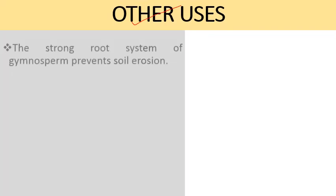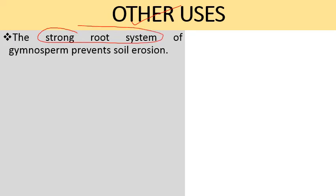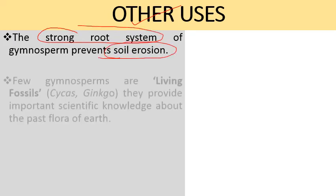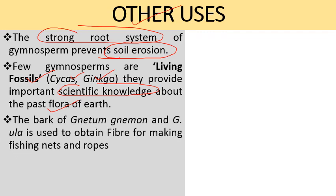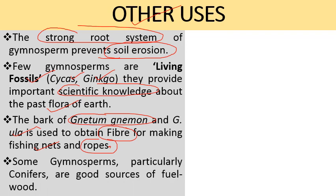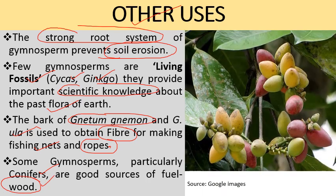Gymnosperms have many other uses. Their strong root system prevents soil erosion, which is an important ecological role. Some gymnosperms like Cycas and Ginkgo are living fossils that provide important scientific knowledge about past flora on earth. The bark of Gnetum gnemon and Gnetum ula is used to obtain fiber for making fishing nets and ropes. Some gymnosperms, particularly conifers, are also a good source of fuel wood.